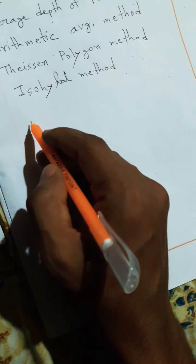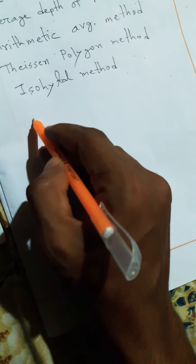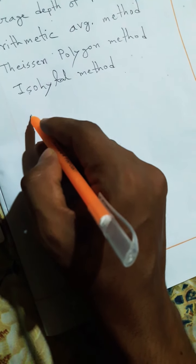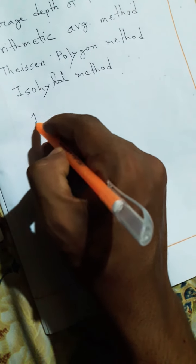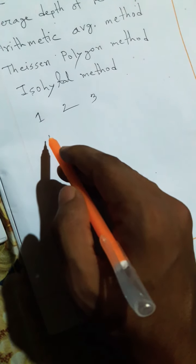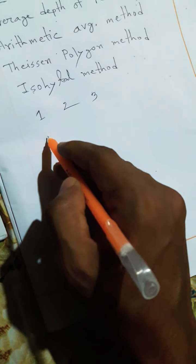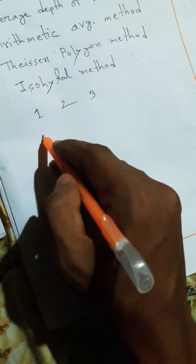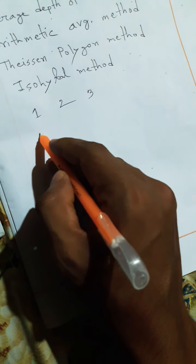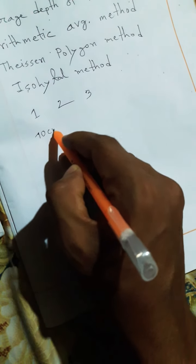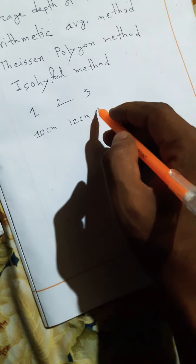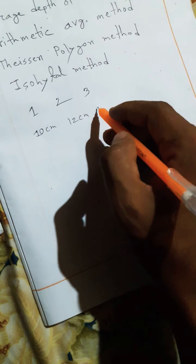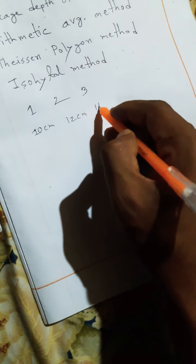For example, if there are three stations - station one, station two, and station three - and the depth of precipitation in station one is 10 centimeters, 12 centimeters in station two, and 15 centimeters in station three.